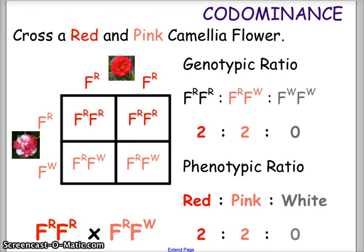Now let's cross a red flower with a pink flower, still using camellia flowers. The red is F^R F^R and the pink is F^R F^W. When we segregate the alleles — F^R over each column for red, and F^R on the top row and F^W on the bottom row for pink — we end up with two offspring that are red (F^R F^R) and two offspring that are pink (F^R F^W). Our genotypic ratio is 2 to 2 to 0, and the phenotypic ratio of red to pink to white also comes out 2 to 2 to 0.